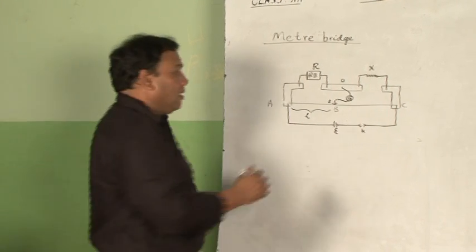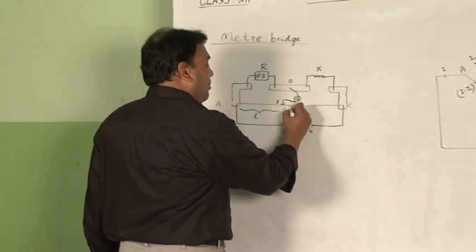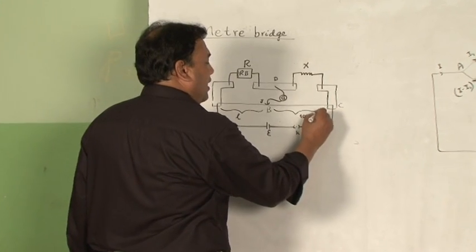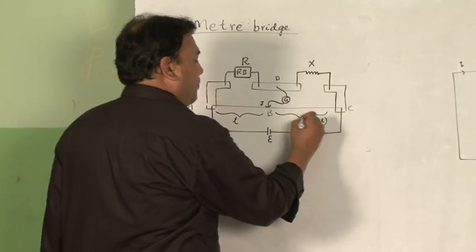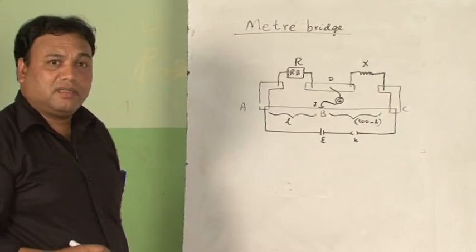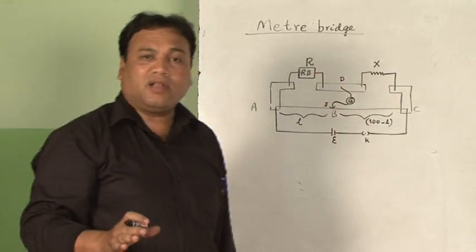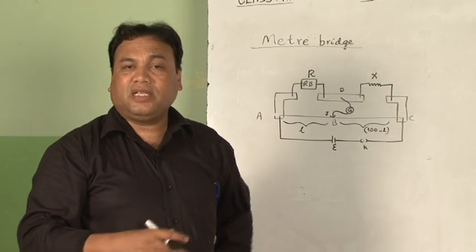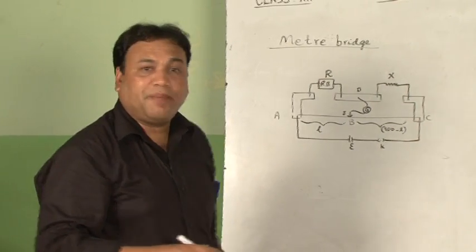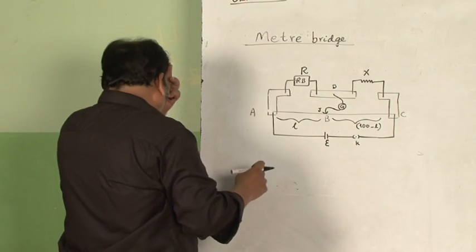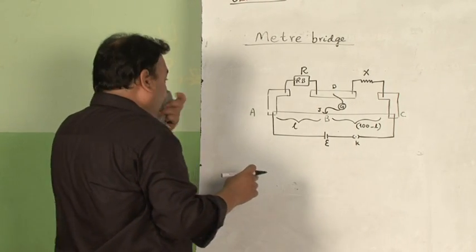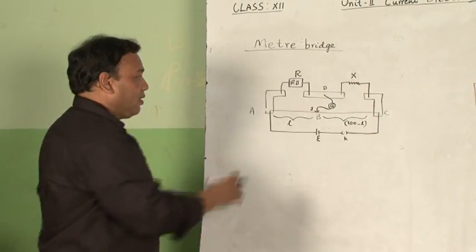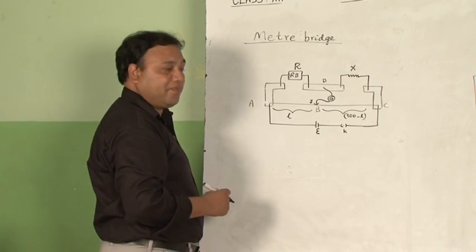The balancing length is L, and naturally the remaining length is 100 minus L. You have to find out the balancing length repeatedly by following these steps, changing the resistance in the left gap. Then what is the formula for this?